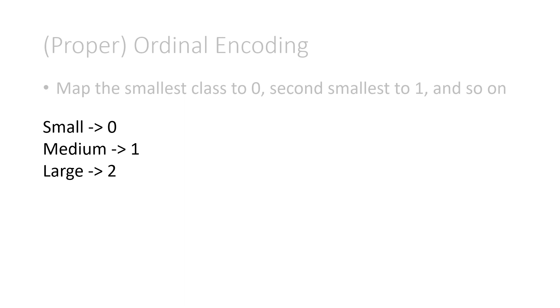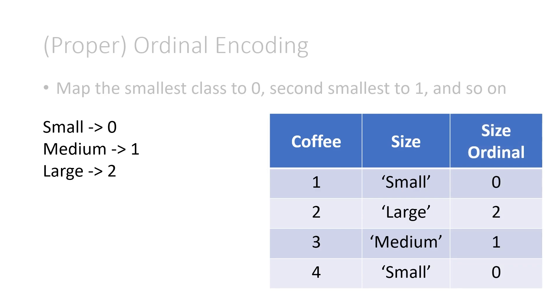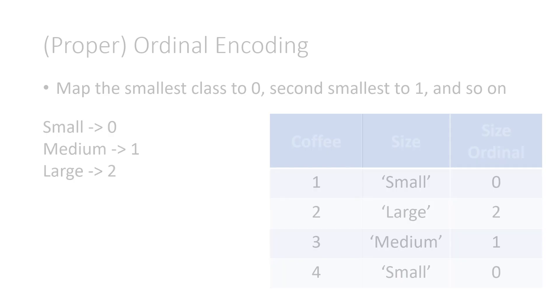So now in this encoding, we'd have our four coffees, our four coffee sizes, but here we'd map small to 0, large to 2, medium to 1, and small to 0 again. This makes it so that order is preserved and it is converted to a number. Both of our main missions are achieved.